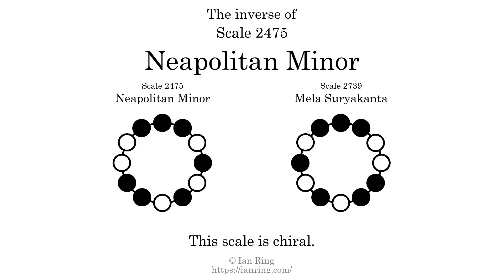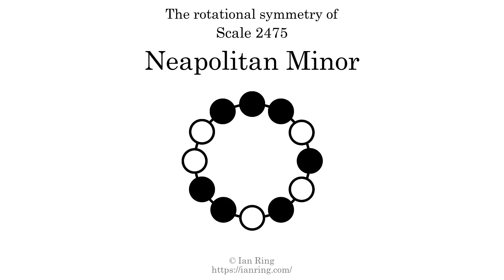The inverse of a scale is a mirror image — it is what you get when the sequence of intervals is reversed. The inverse of this scale is scale 2739, also known as Mila-Suriakanta. This scale is chiral: it cannot transform into its inverse by rotational transformation. This scale has no rotational symmetry.